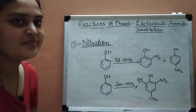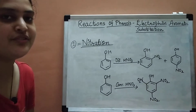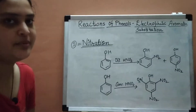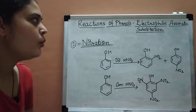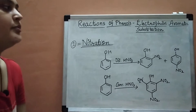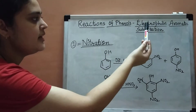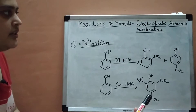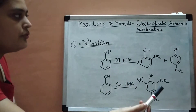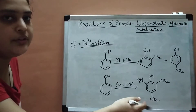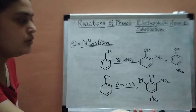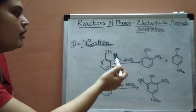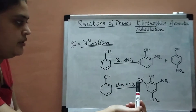Today we'll learn about reactions of phenols, particularly electrophilic aromatic substitution (EAS) reaction. As the name suggests, the electrophile is the attacking reagent. Electrophiles are electron-deficient, so they will attack molecules that are electron-rich. Phenol is electron-rich due to the presence of an activating group — the OH (hydroxy) group.